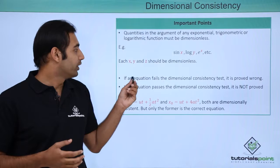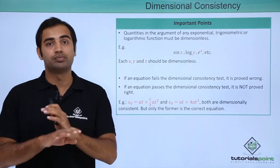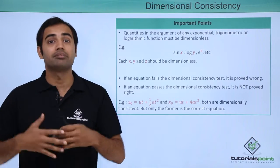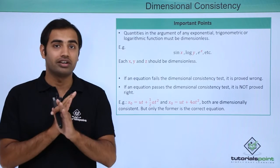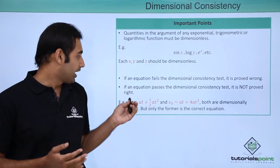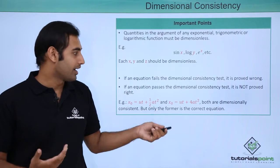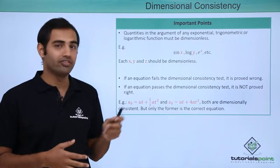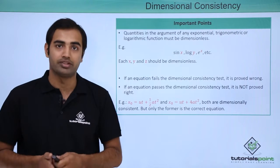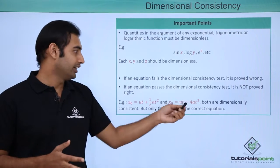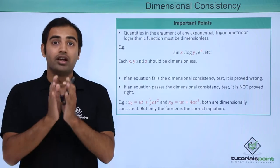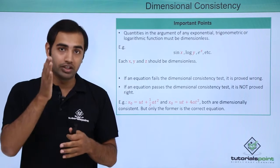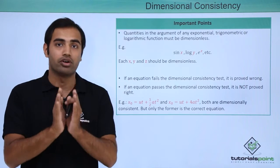If an equation fails the dimensional consistency test, it is proved wrong. If an equation is not dimensionally consistent, it is clearly wrong. However, if an equation passes the dimensional consistency test, it is not necessarily right. For example, x₀ = ut + ½at² and x₀ = ut + 4at² are both dimensionally consistent because 4 and ½ are pure dimensionless numbers. But the second equation is wrong. So dimensional consistency is necessary but not sufficient to prove an equation correct.